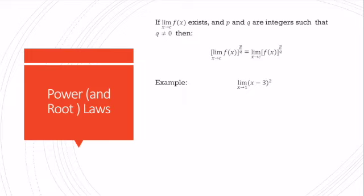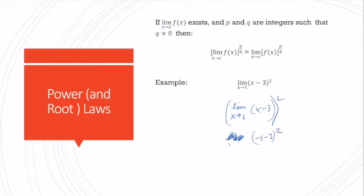Another example: the limit of √((x−3)²) is the same as the limit as x goes to 1 of (x−3)², so we take the limit as x goes to 1. We get (1−3) = −2, and (−2)² = 4.